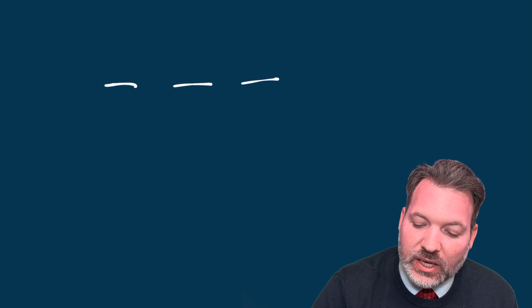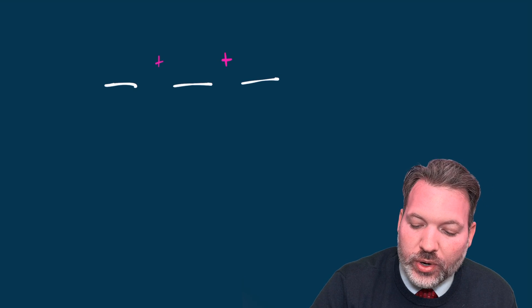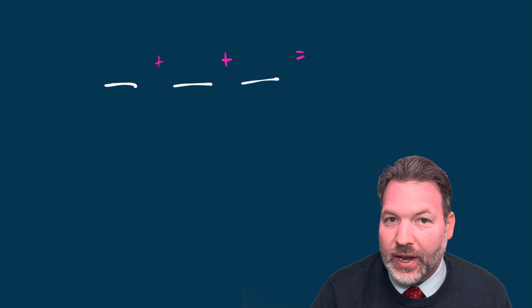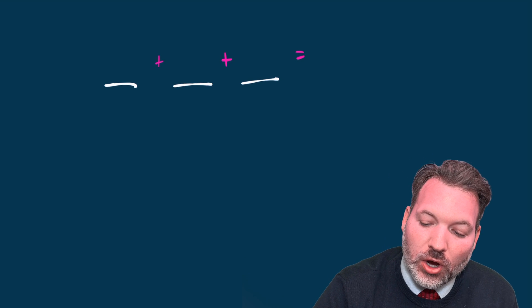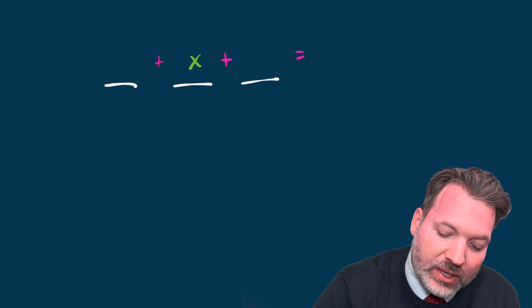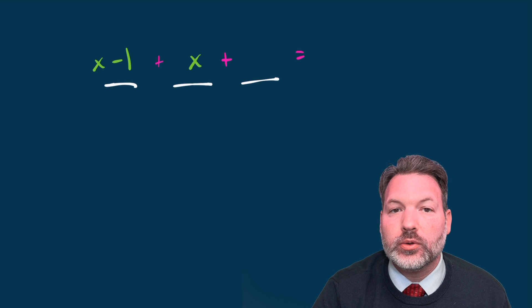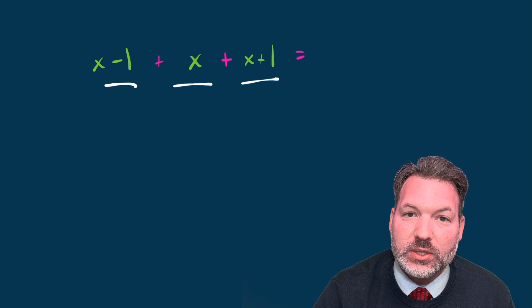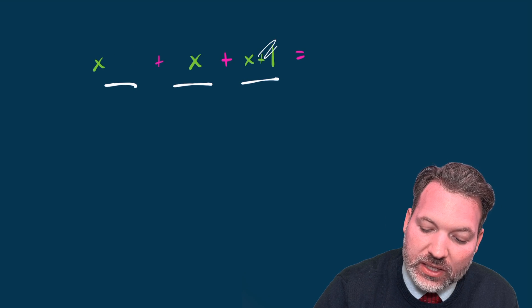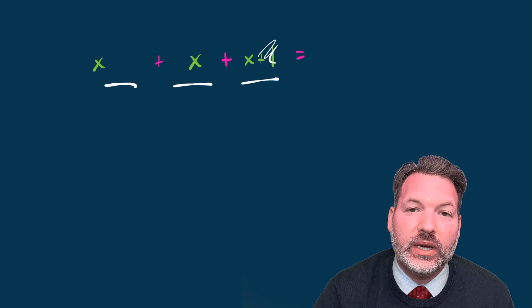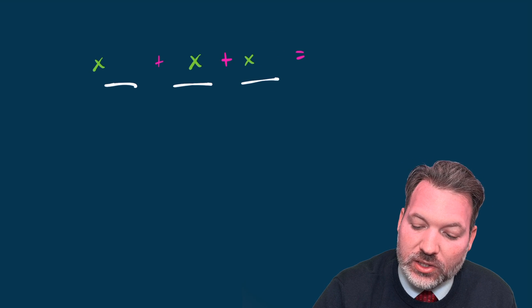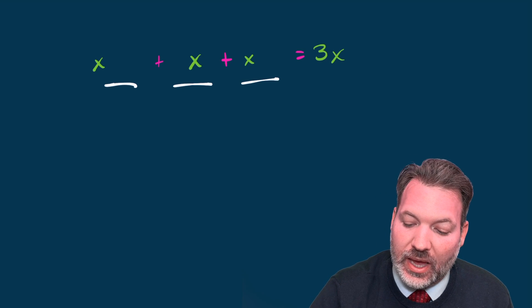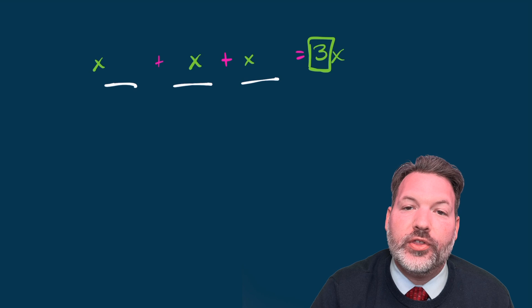It's relatively easy to see why this is if we start with something like three consecutive integers. Instead of calling the first one x, and then the next one x plus one, and the next one x plus two, let's call the middle one x this time. And that means that the one right before it, the one one smaller, would be x minus one, and the one right above it, the one one bigger, would be x plus one. You can tell that as we add these together, the minus one and the plus one are going to cancel each other out. And therefore our sum is always going to be three times x or five times x, seven times x, whatever odd number we started with of those x's.